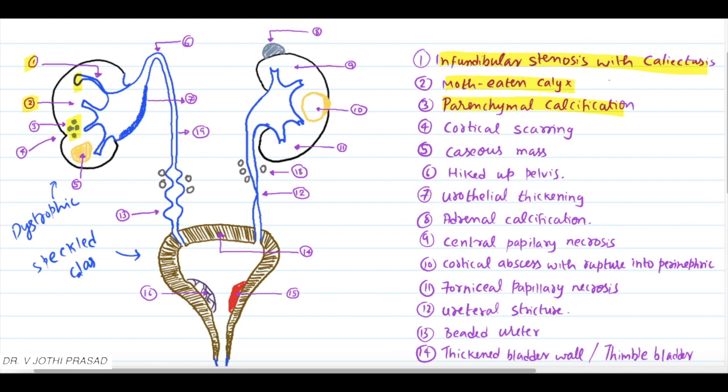Coming to the next finding: cortical scarring. Renal scarring occurs, as in case of calcification, in later stages. The fifth one is a caseous mass, which is a collection of epithelioid and Langerhans giant cells.